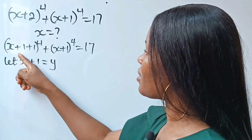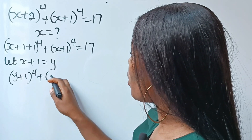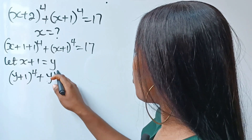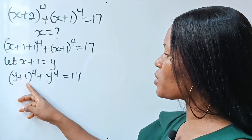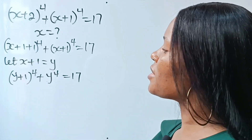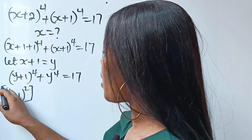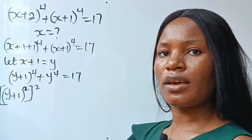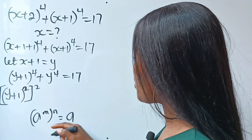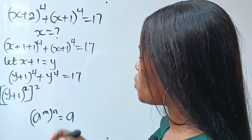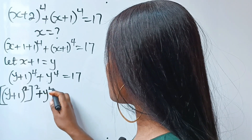With that substitution, the equation becomes y plus 1 raised to the power of 4 plus y raised to the power of 4 is equal to 17. Now, y plus 1 raised to the power of 4 can be written as y plus 1 squared, all raised to the power of 2, because according to the law of indices, a^m raised to the power of n equals a^(mn), and 2 times 2 gives us 4.